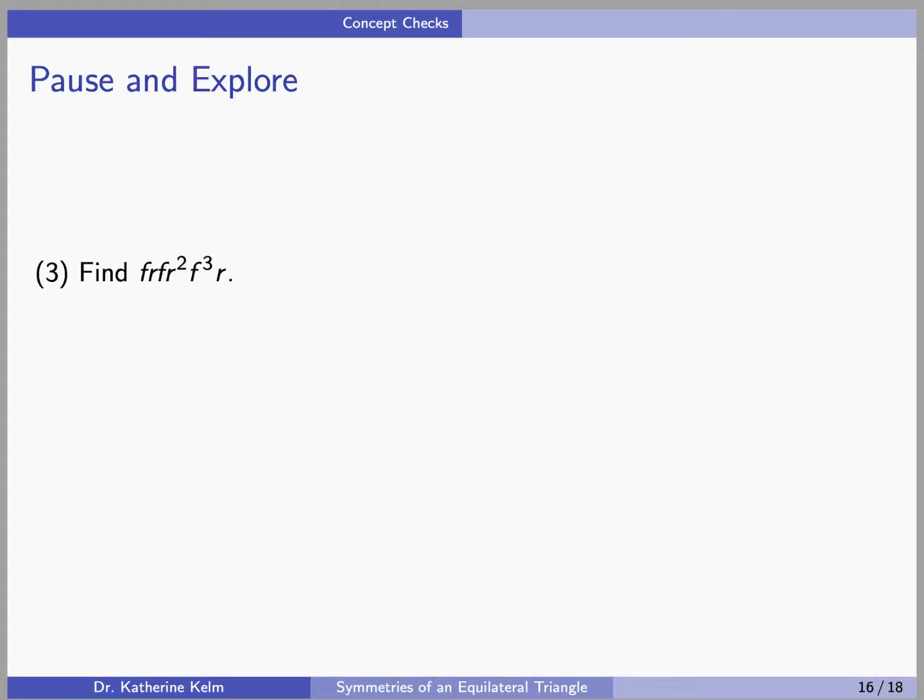Okay, so here's our last pause and explore. Find FRFR squared F cubed R. What function do you get? What are the assignments? What does 1 get sent to? What does 2 get sent to? What does 3 get sent to? Pause the video and come back when you're ready.